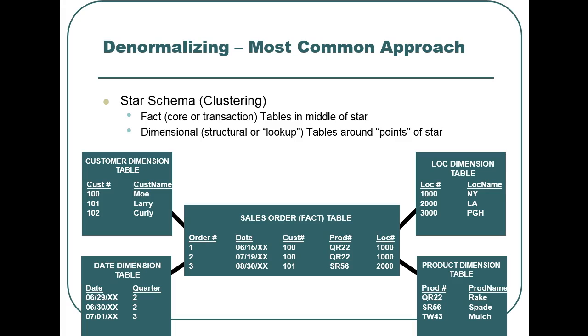In this example, our sales orders make up our central fact table. The surrounding dimensions include customers, products, locations, and dates.